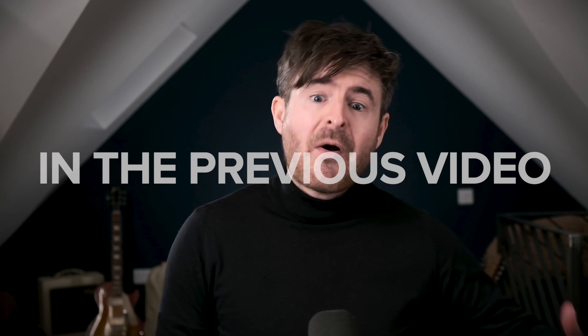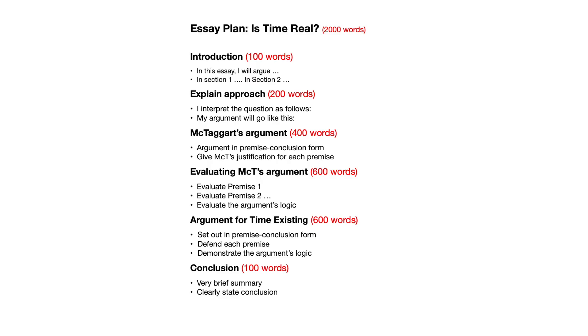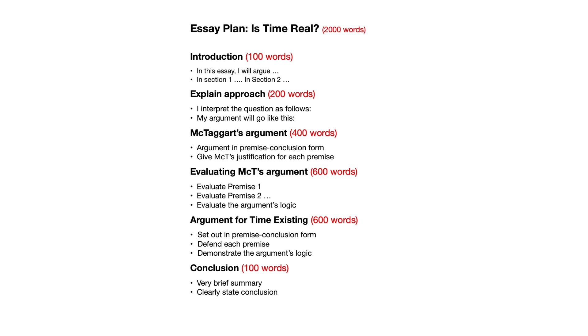I've pretty much been talking about how to put together a good, detailed essay plan. If you sent me this sheet of paper here, I would know exactly what you're going to do in your essay — I can pretty much see what the essay is going to be. All that's missing is what the actual arguments are and how you're going to evaluate them. If you then take this essay plan and write the actual essay based on it, it's actually pretty easy because you just take each bullet point in turn and write a paragraph — a hundred words or whatever — based on it, doing exactly what that bullet point asks you to do.